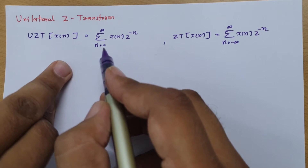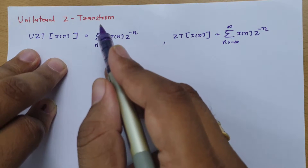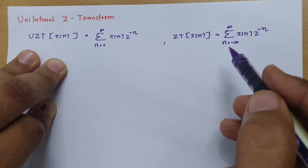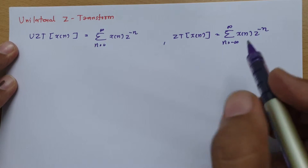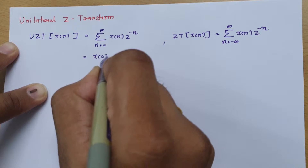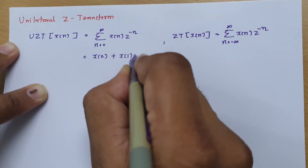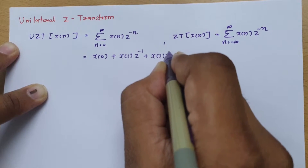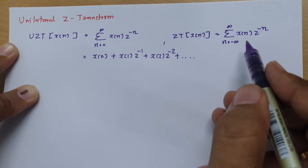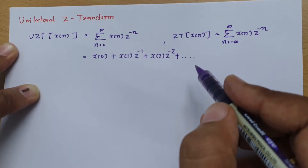The basic difference between unilateral and bilateral Z-transform is the limits of summation. For unilateral: summation from 0 to infinity of X(n) * Z^(-n); for bilateral: summation from minus infinity to infinity of X(n) * Z^(-n). If you expand the unilateral summation, you get: X(0)*Z^0 + X(1)*Z^(-1) + X(2)*Z^(-2) and so on, while bilateral extends in both directions toward negative and positive infinity.